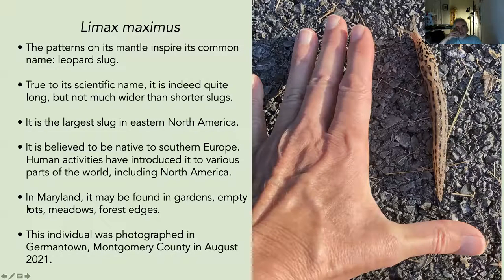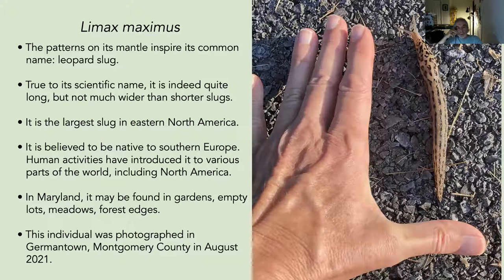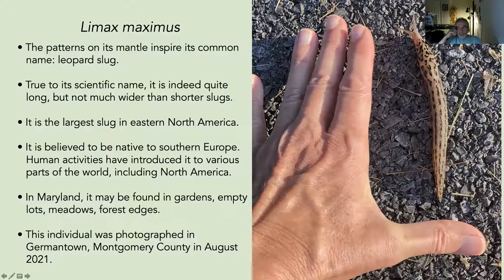The famous slug Limax maximus — the leopard slug — is named for the patterns on its mantle. It is one of the largest slugs, and the largest slug in eastern North America. Believed native to southern Europe, it has been introduced to many parts of the world including North America. In Maryland it's quite common in gardens, empty lots, meadows, and forest edges.